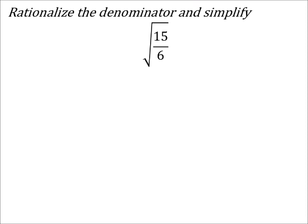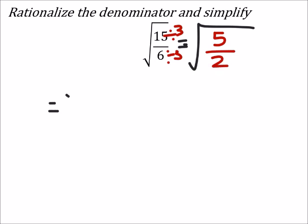On this one, 15 and 6 are both divisible by 3, so in the radical we can already simplify just what's inside. In the 6, I'm going to divide by 3, and in the 15 also by 3, so this ends up being 5 halves.